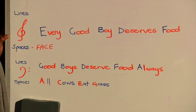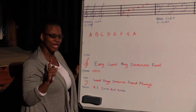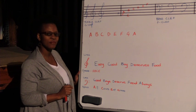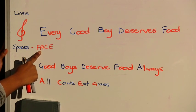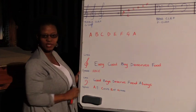Now for the spaces, you can just remember the word FACE—F, A, C, E. It's all the spaces on the treble clef.